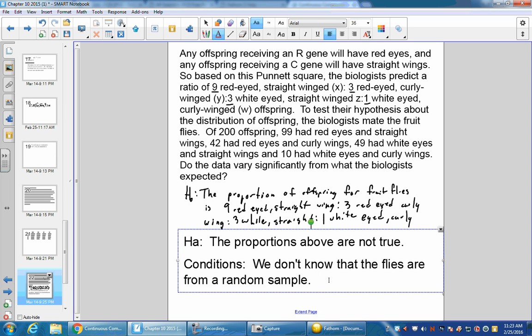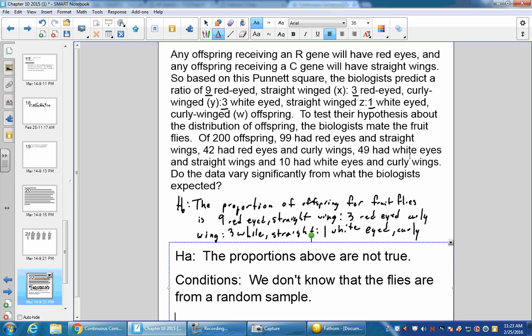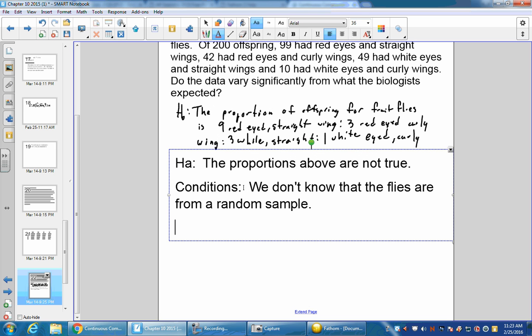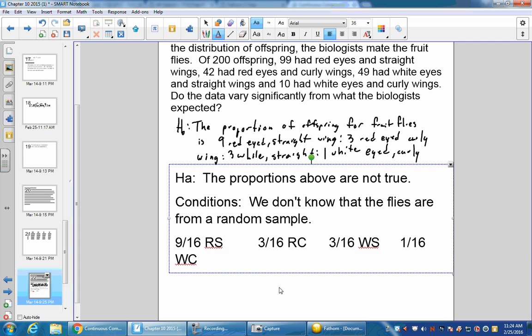Are all expected counts greater than 5? If we had 200, the proportions are 9 to 3 to 3 to 1. So there's a 9/16 chance that they'll be red-eyed with straight wings, a 3/16 chance that they'll be red-eyed curly, another 3/16 chance that they'll be white-eyed straight, and a 1/16 chance that they'll be white-eyed curly.